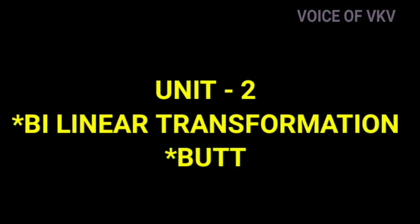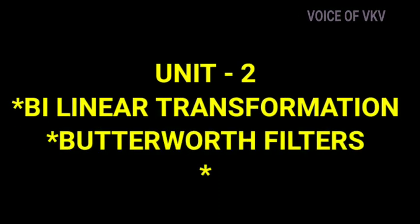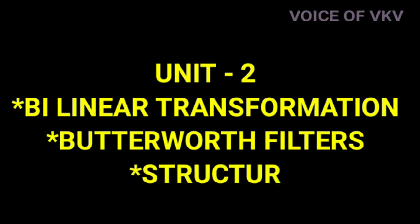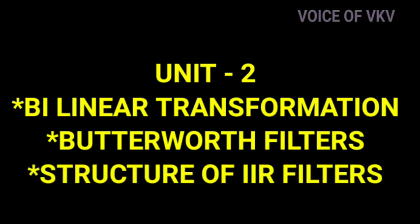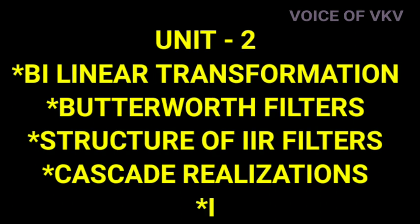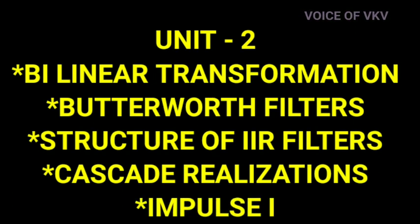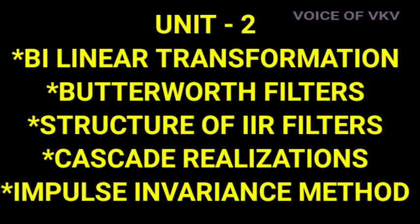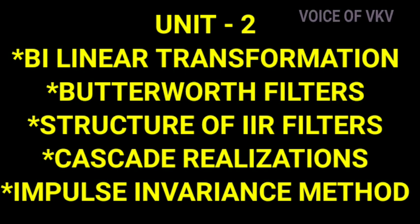Unit 2 has a total of 5 important topics. The first one is Bilinear Transformation. The second one is Butterworth Filters. The third one is Structure of IIR Filter. The fourth one is Cascade Realization. The fifth one is Impulse Invariance Method. These are the 5 important topics in Unit 2.